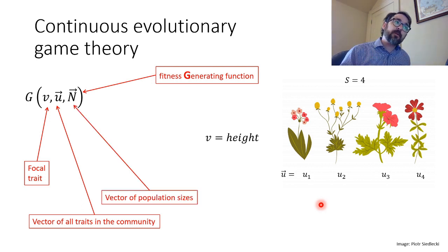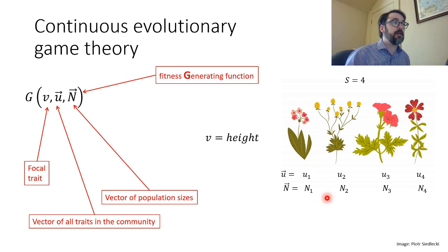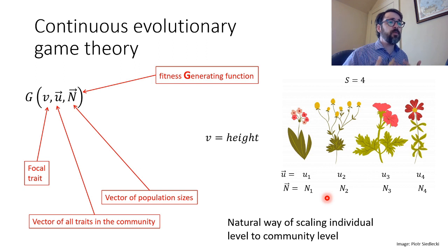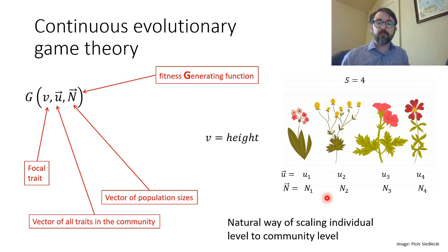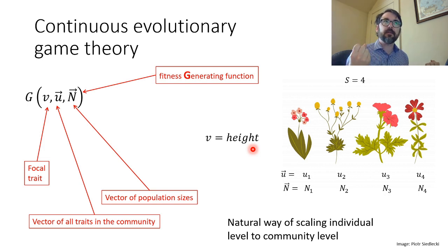What's cool about evolutionary game theory is that we can also have a vector of population sizes, N. That vector is the same length as U, so each species has a trait and each species has a population size. This is a really natural way of scaling from the individual level to the community level — we can capture the interactions that individuals are having by linking their trait evolution to their population dynamics. It goes back to this idea of the ecological theater and the evolutionary play.